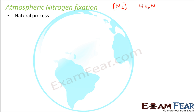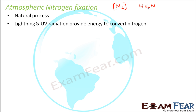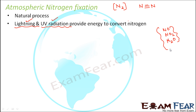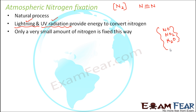Atmospheric nitrogen fixation is a natural process where we do not supply energy artificially. In nature, that energy is provided by lightning and ultraviolet radiation. These provide the energy required to break the triple bond of nitrogen, converting it into oxides like NO, NO₂, or N₂O. These oxides in turn get converted into usable forms like ammonia or nitrates. However, only a very small amount of nitrogen is fixed this way, so this process is not very useful.